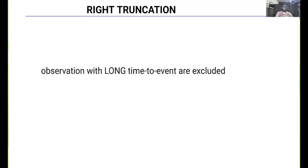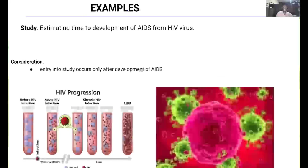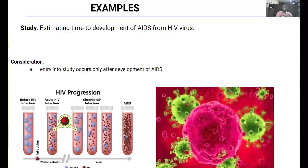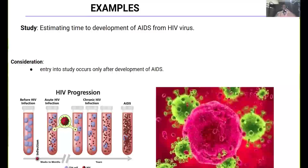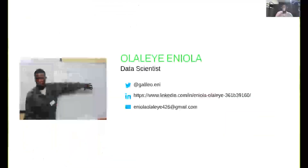Right truncation occurs when observations with long time to event are excluded from the dataset. For example, in a study estimating the time to development of AIDS from HIV: the study follows people with HIV to see when HIV turns into AIDS. If some patients in the dataset only enter the study after already developing AIDS and we do not know when they had HIV, we have to exclude that kind of observation from the dataset. This is an example of right truncation.